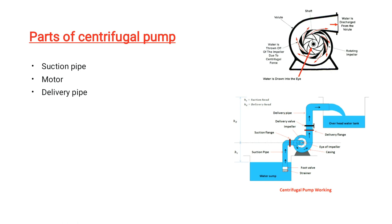The main parts of the centrifugal pump include the suction pipe, motor, and delivery pipe. The suction head is the distance between the water surface and the impeller. The main function of the suction pipe is to lift the water from the source. The delivery pipe carries water from the pump outlet. A strainer on the foot valve works for purification of water, preventing foreign material from entering.